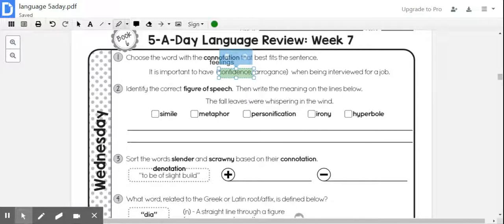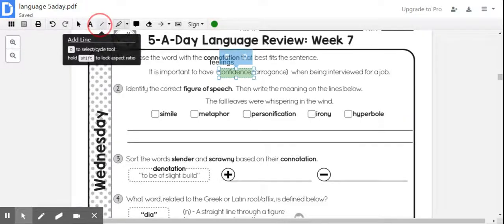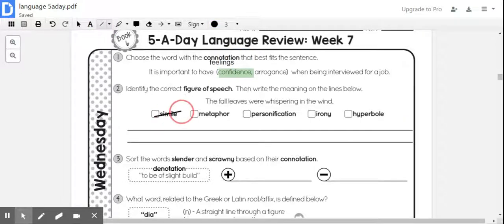Number two, it says identify the correct figure of speech, then write the meaning on the lines below. The fall leaves were whispering in the wind. Okay, so there isn't anything that's being necessarily compared to something else. So we can automatically eliminate simile and metaphor.